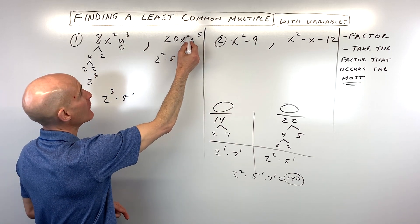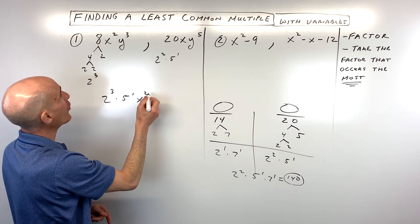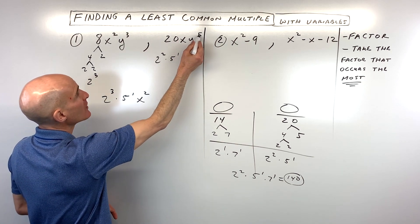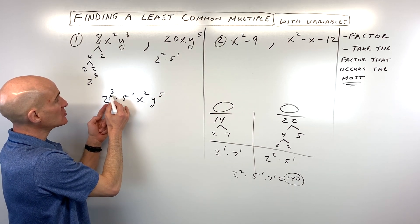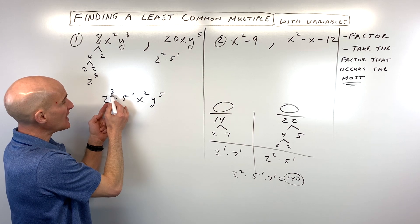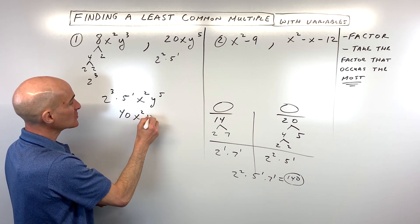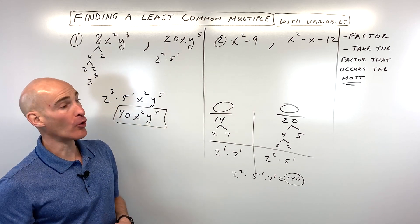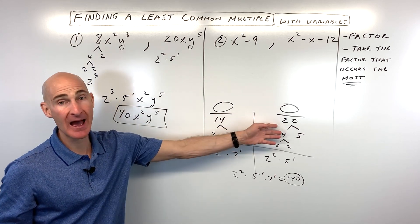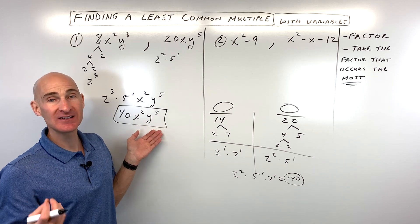Here we have 3 y's, here we have 5 y's, we're going to take the one that occurs more. So if we multiply this together, 2 cubed is 2 times 2 times 2, which is 8, times 5 is 40, x squared, y to the fifth. And that's going to be your least common multiple, or if you're thinking about finding a common denominator, that's like your lowest common denominator.